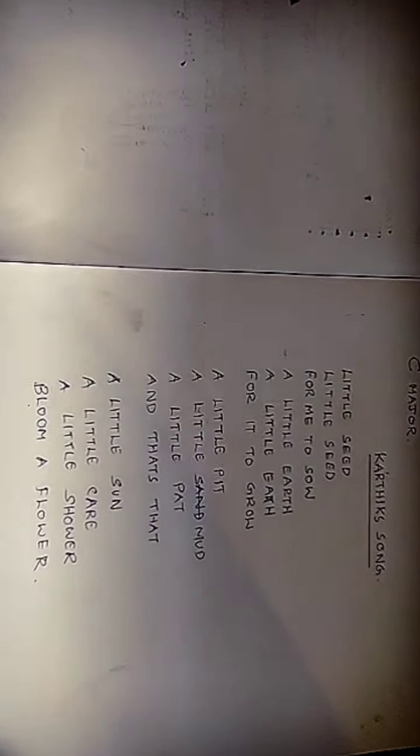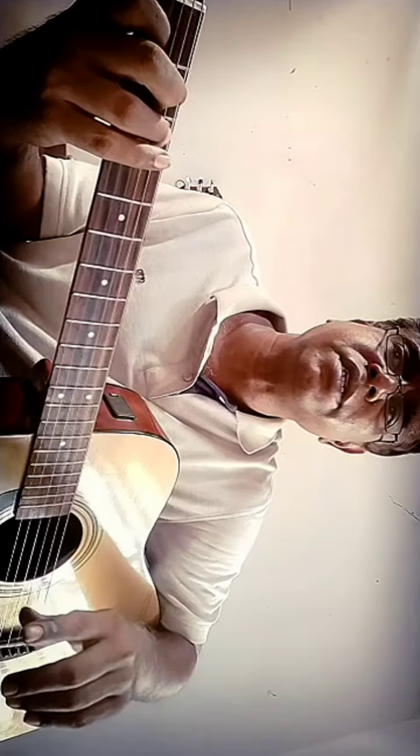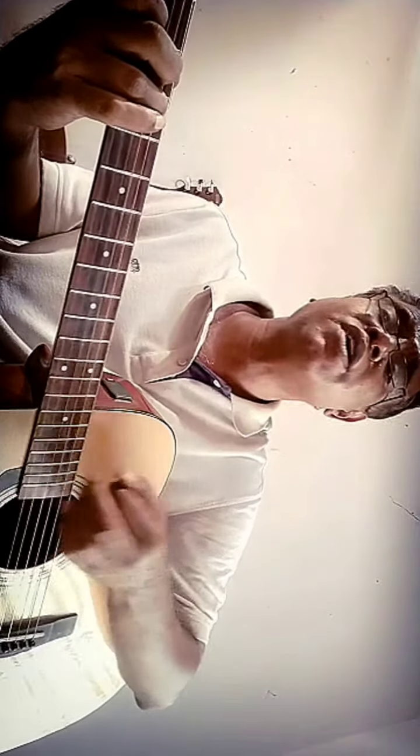Just hold the shape you see in the chord grid using your three fingers — the index, middle, and ring — and be sure you strike both down and up, down and up, all along the song. Little seed, big seed, for me to sow. Little earth, little earth, for it to grow. A little bit, a little mud, a little pad, and that's that. A little song, a little care, a little shower, room of flower.